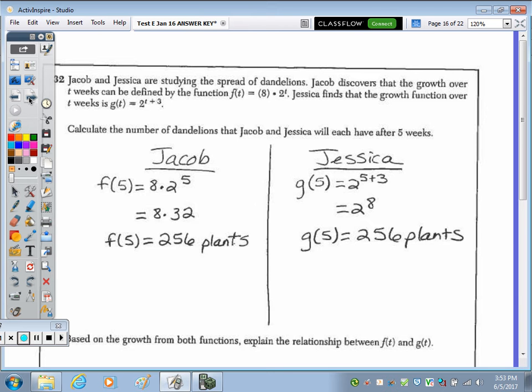Number 32. Jacob and Jesse are studying the spread of dandelions. Jacob discovers that the growth over T weeks can be defined by the function f(T) = 8 × 2^T, where Jessica finds that the growth function of T weeks is g(T) = 2^(T+3). Calculate the number of dandelions that Jacob and Jessica will have after 5 weeks. Well, for both functions, T represented the number of weeks. So we're going to substitute 5 for T into both. We come out with 256 plants for Jacob and 256 plants for Jessica. So they have the same amount.